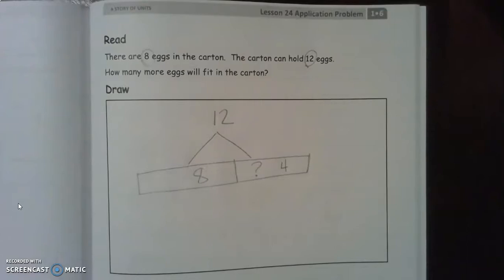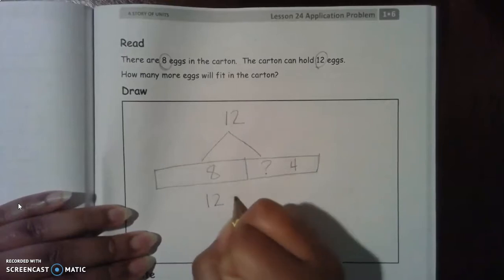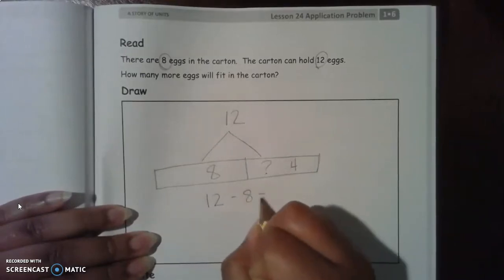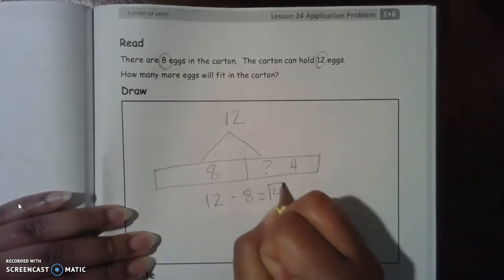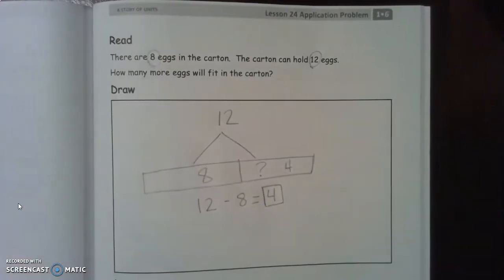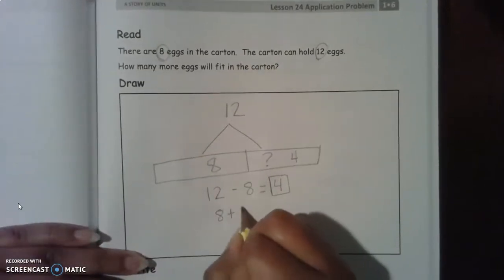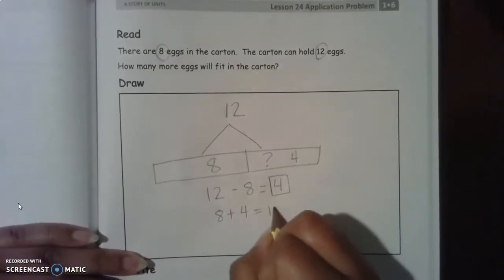How could we write that in a number sentence? We could do 12 minus eight equals four. Or, which is what we did, eight plus four equals 12.